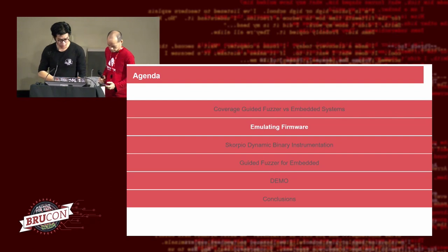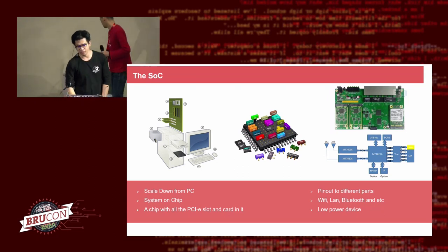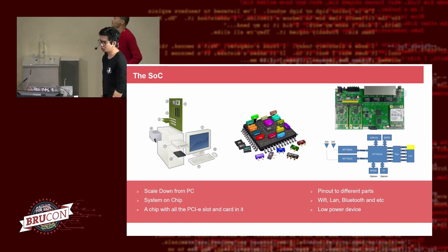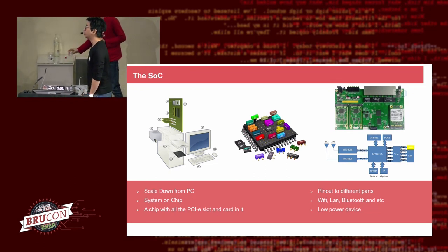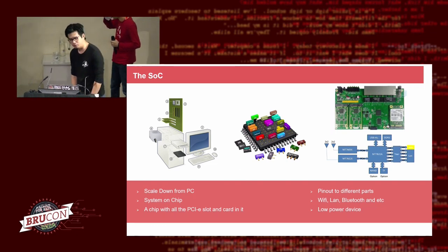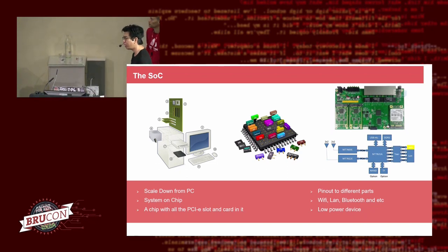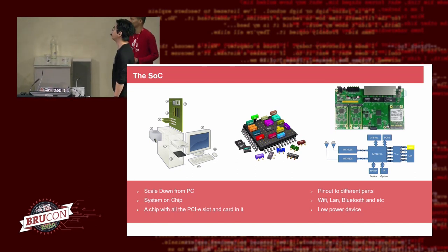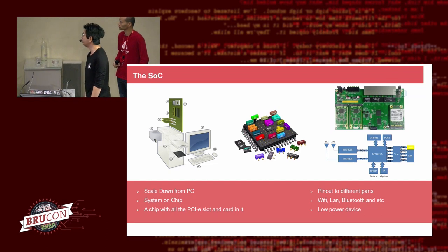We're going to talk about our firmware emulation and why firmware emulation is needed — we have very limited resources on embedded systems. Before we start, the first thing we want to talk about is SoC. We used to have PCs in the old days and then we started to have SoC, where vendors can build ARM64 devices chip by chip, with better power consumption, better performance, and cheaper prices. Everything is scaled down from PC, including security.